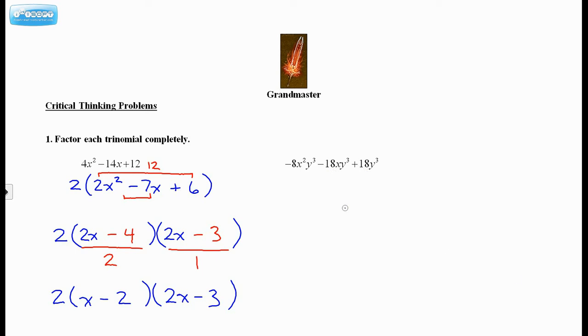So we're just going to factor out the GCF, everything that's possible. So I'm going to factor out, let's see, what can I pull out? I can't even pull out a 4. I can pull out a 2, but I'm going to pull out the negative, and I can pull out the y cubed. Okay, so that leaves 4x squared plus 9x, and this would be a minus 9.